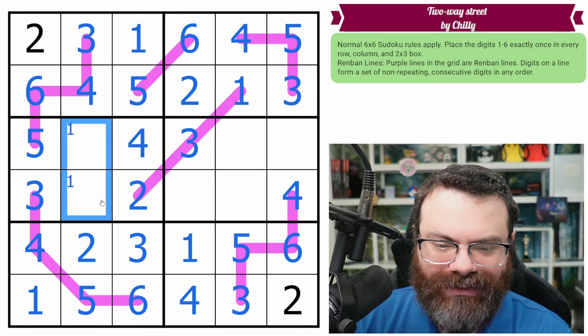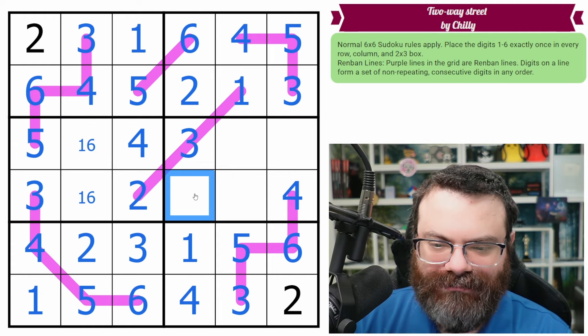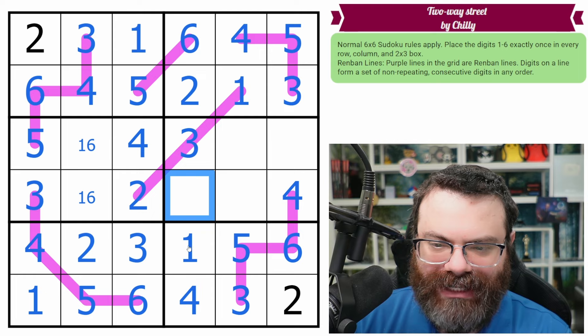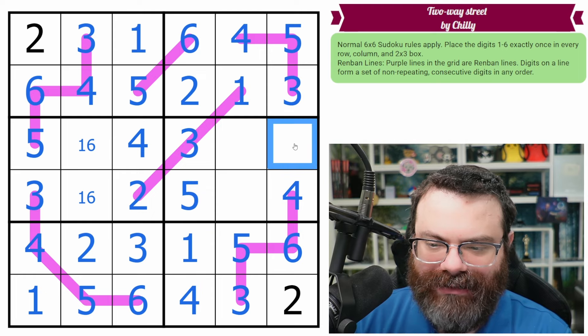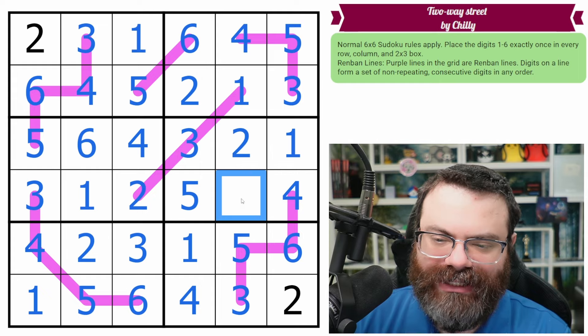Now it should just be Sudoku. What do we need in here? We need a 1 and a 6 in here. That's not resolved. This is resolved, though. This is a 5. This is resolved as a 1. That gives us the 6 and 1. We need a 2 and a 6. And we're done.